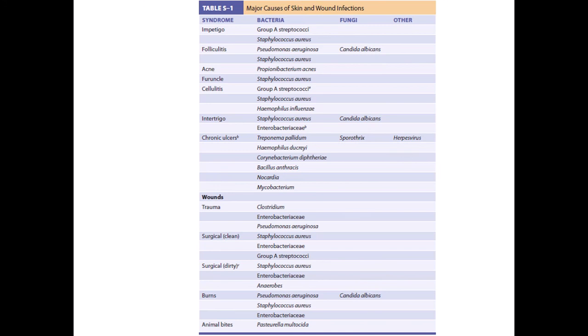A collection of micro-abscesses is called a furuncle, caused by Staphylococcus aureus, and a collection of furuncles is called a carbuncle. It is very important to know these clinical terms: furuncle, folliculitis, carbuncle — caused by Group A beta-hemolytic strep as well as Staphylococcus aureus.